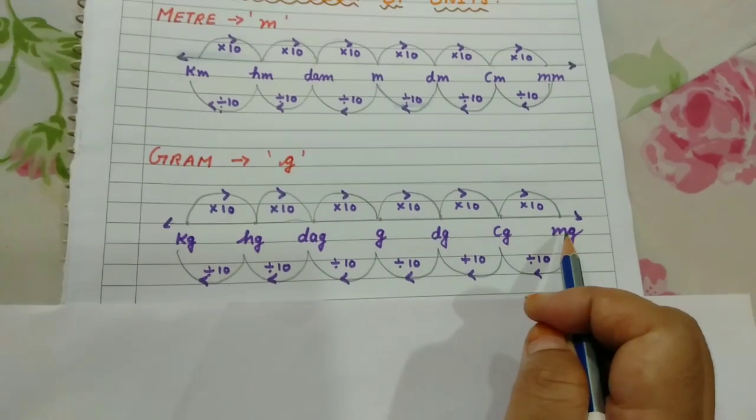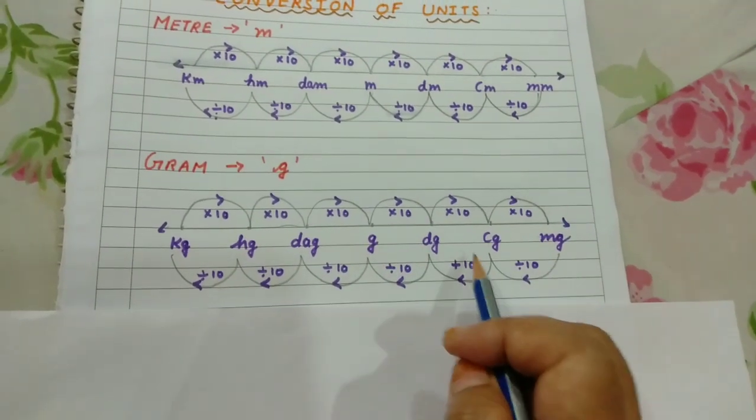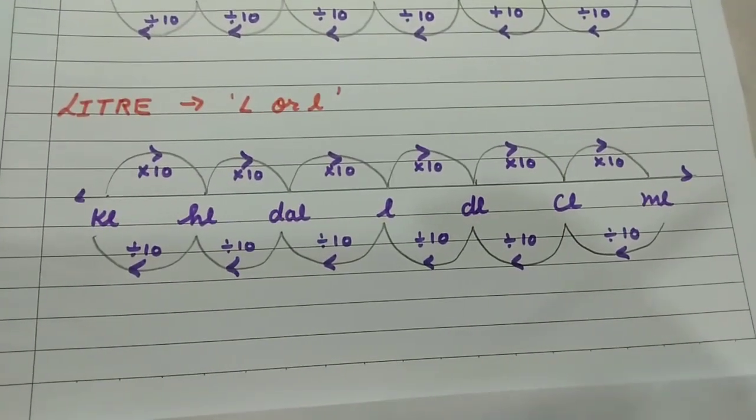When you have to convert kilogram into grams, you go three steps to the left side. You have to follow the same rule with liters too.